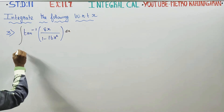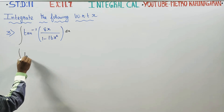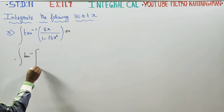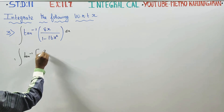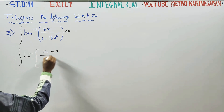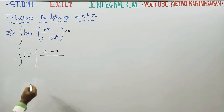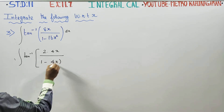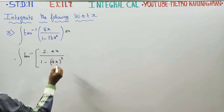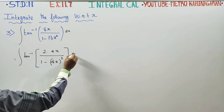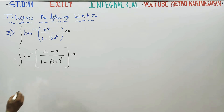Stage 1. Tan inverse of 8x can be written as 2 into 4x, divided by 1 minus 16x squared, into dx. This is the first technique.